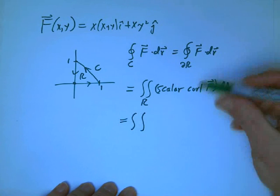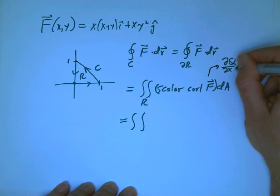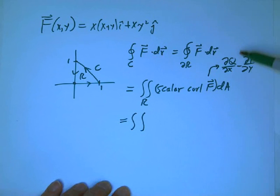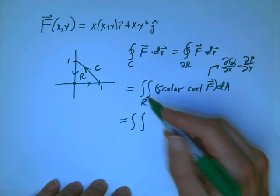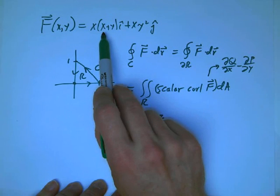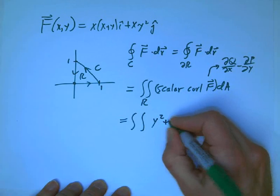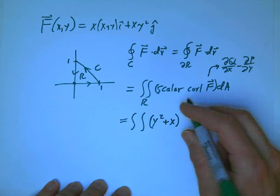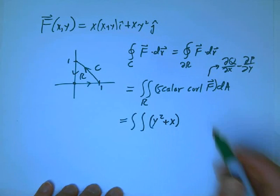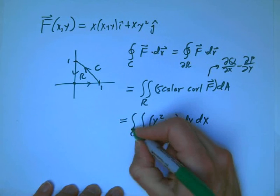I'll leave some space for the limits there. Scalar curl of F, of course, is dq/dx minus dp/dy. Got to get the sign right if you want to get the right answer. So dq/dx is y squared. And dp/dy, the x squared doesn't contribute anything, and so xy is just x. Now I want to set it up as a dy dx or dx dy. Let's just set up dy dx, it shouldn't matter.